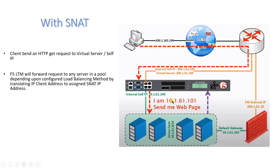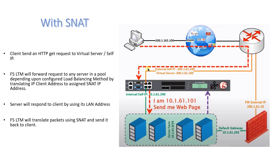Assume the assigned SNAT IP is 10.1.61.101. The F5 LTM translates the client IP 200.1.165.100 to 10.1.61.101. The server receives the request from the translated source IP 10.1.61.101 and responds back to 10.1.61.101. The F5 LTM then translates the packet using SNAT and sends it back to the client. The client has sent an HTTP GET request, the F5 BIG-IP LTM translated it to SNAT IP 10.1.61.101, the server responded to that IP, and F5 LTM returned the response to the client.